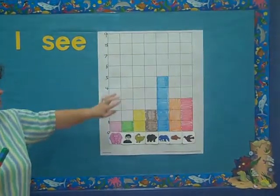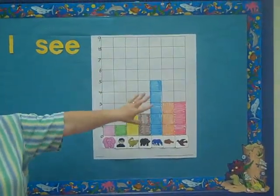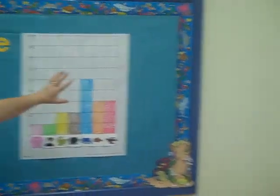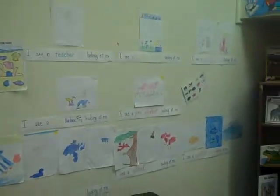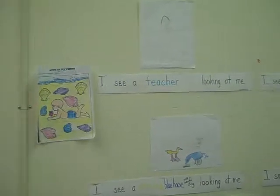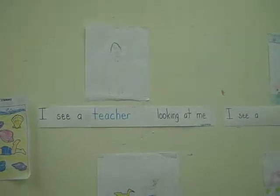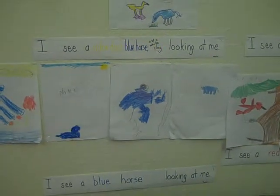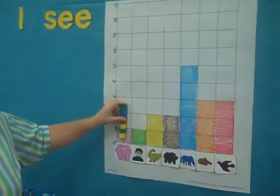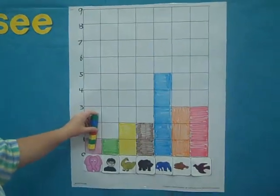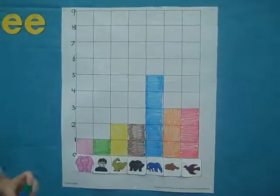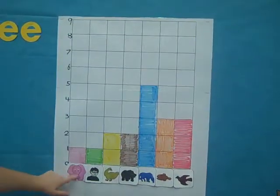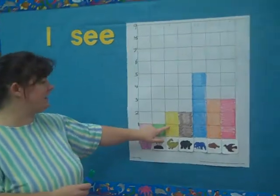Once they counted them and saw, they drew their pictures and made their sentences about who liked the pink elephant, who liked the pig — whoever they liked out of the story. Then they came back and we put our linking cubes and laid them on the graph. We all sat in a circle on the floor and laid them all on the graph. Then they had to color them as part of their pictorial so that they could see it.